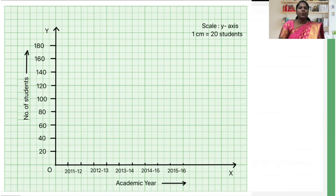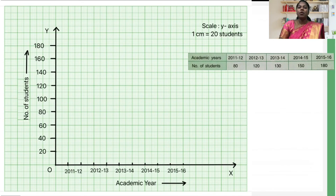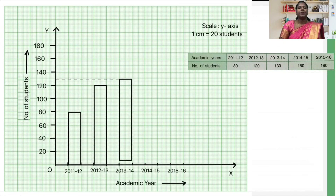In step 5, let's draw the vertical bars representing each category of academic year with the corresponding number of students. Remember, all bars drawn must be of the same width, the distance between consecutive bars must be the same, and the heights of each bar must be proportional to the corresponding values on the Y-axis. In academic year 2011-2012 the number of students is 80; in 2012-2013 it is 120; in 2013-2014 it is 130; and in 2014-2015 it is 150.